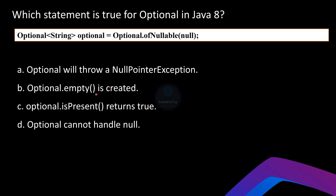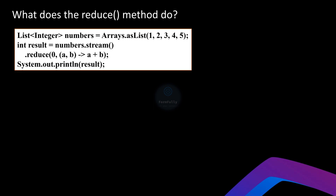Choice B — '`Optional.empty()` is created' — is the correct answer, since we pass null to `Optional.ofNullable`, which returns an empty optional with no value inside. Choice C — '`Optional.isPresent()` returns true' — is incorrect because `isPresent` would return false when the optional is empty. Choice D — 'Optional cannot handle null' — is also incorrect; the whole point of Optional is to safely handle potentially null values. The `ofNullable` method is specifically designed for this purpose. So option B is correct.